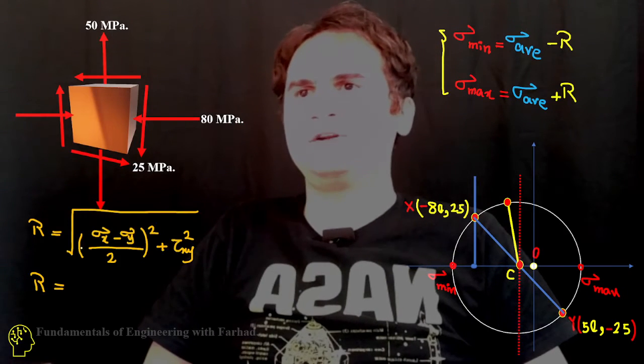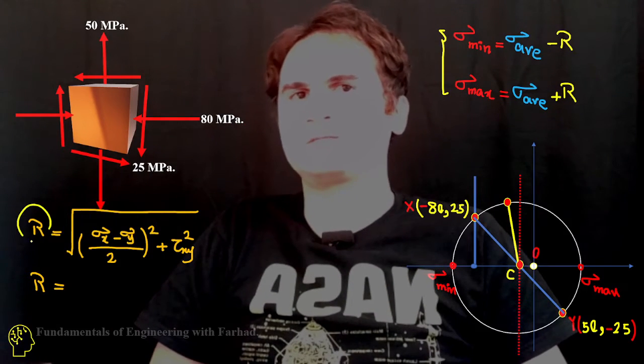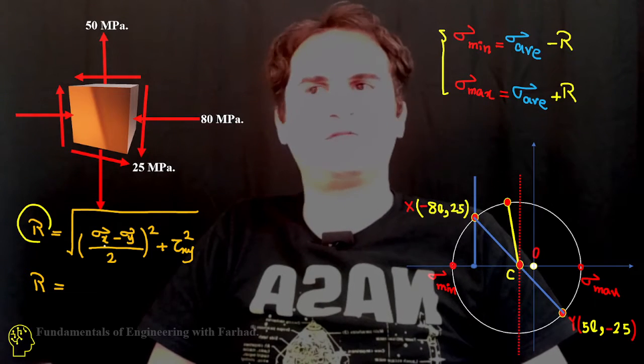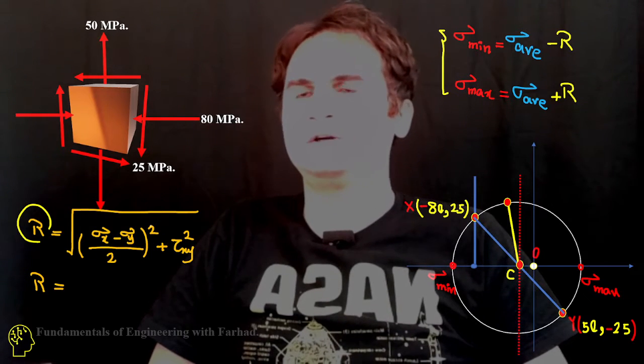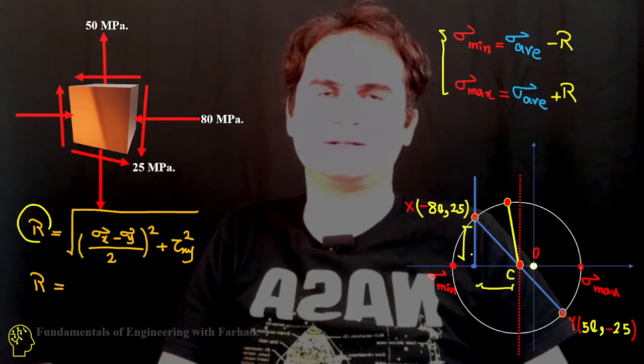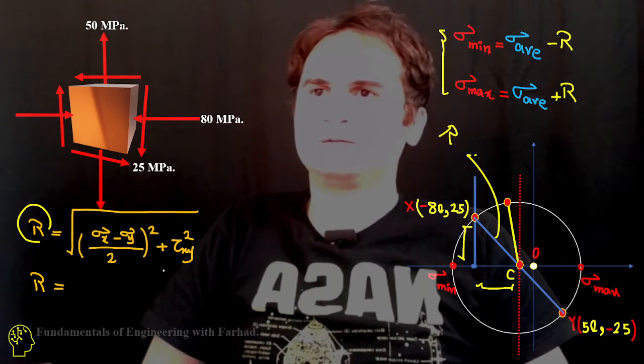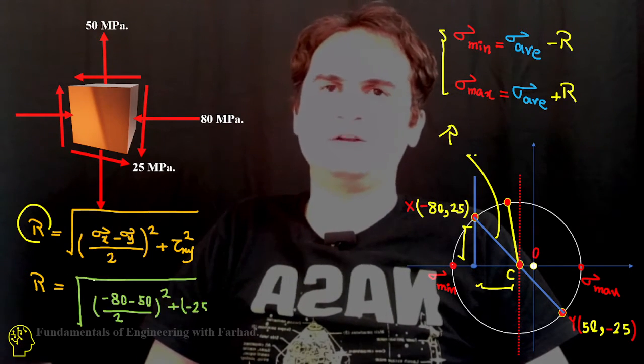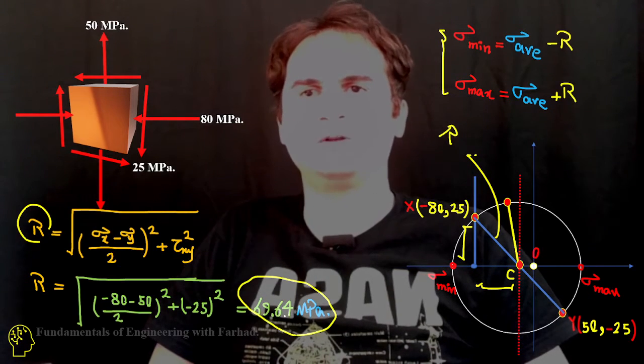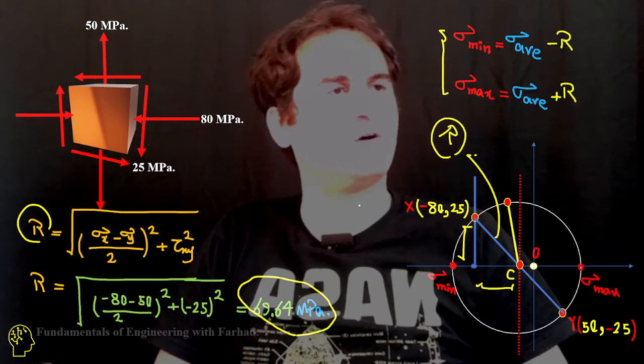So sigma average. First we can calculate our radius, which is this part. That's sigma x minus sigma y over 2 squared plus tau xy squared. This distance squared plus this distance, this is our hypotenuse which is r, that's our radius. If you replace by the numeric values, it just gives us 69.64 megapascals for our hypotenuse, which is our radius of our circle.